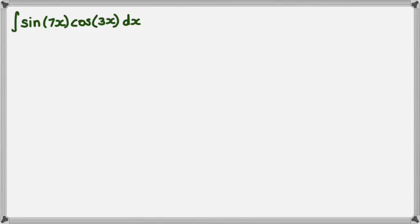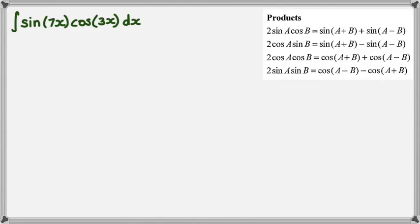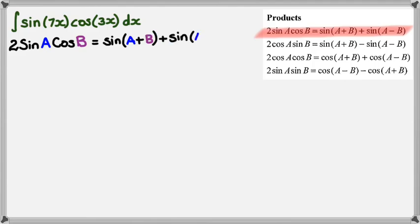Let me find it first. There's the table. The product's right there. We're looking for the one with sine and cosine. There it is. I'll write down the formula: 2sin(A)cos(B) = sin(A+B) + sin(A-B). Now, I have a 2 on the left-hand side that I want to get rid of, so I'll divide both sides by 2.